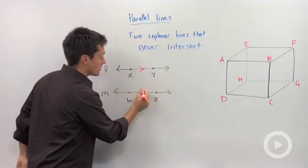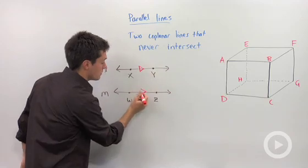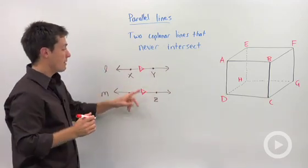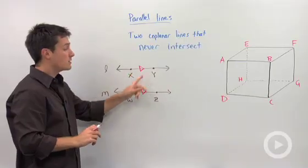Some textbooks will use an arrow like that. Other textbooks will draw in one more line and make your arrows like that. You can identify parallel lines by having the same number of arrows.